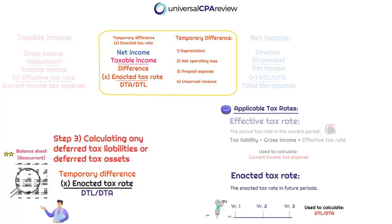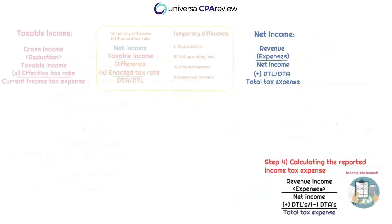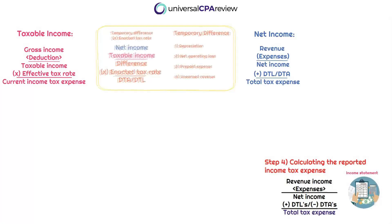We finally made it back to the income statement — this is the financial reporting exam after all. The current income tax expense — the tax liability we owe the IRS — is important because it represents the current portion of the ultimate tax expense that gets reported on the income statement. That's the current portion, whereas the DTA or DTL represents the deferred portion.